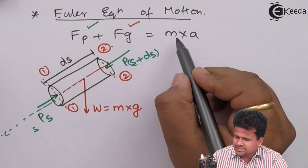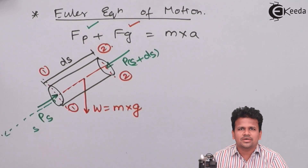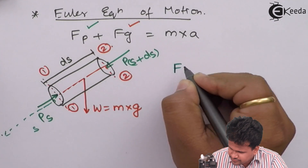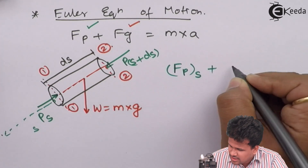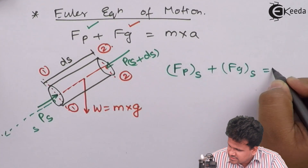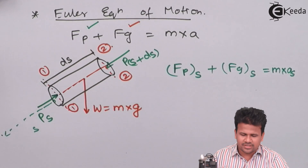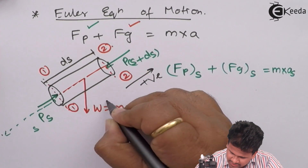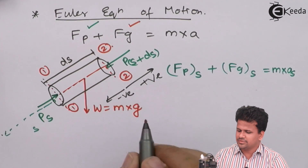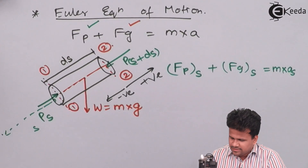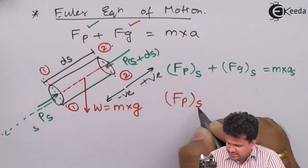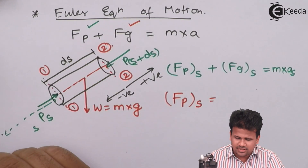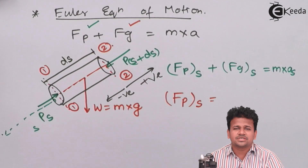We know that this equals mass into acceleration along that direction. Let us consider acceleration along S direction. This can be written as: force due to pressure along S direction plus force due to gravity along S direction equals mass into acceleration along S direction. Considering all forces going upward as positive and going downward as negative, let us write down this equation for the force due to pressure.